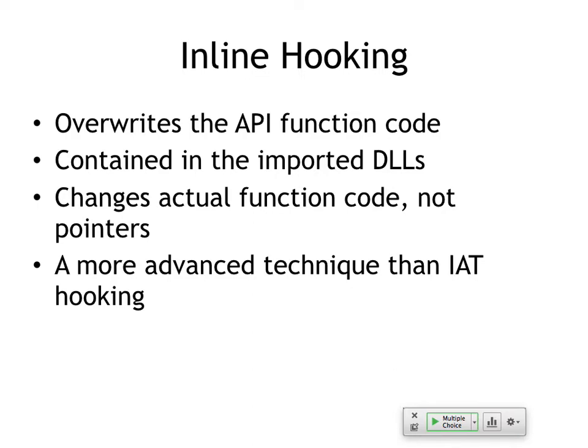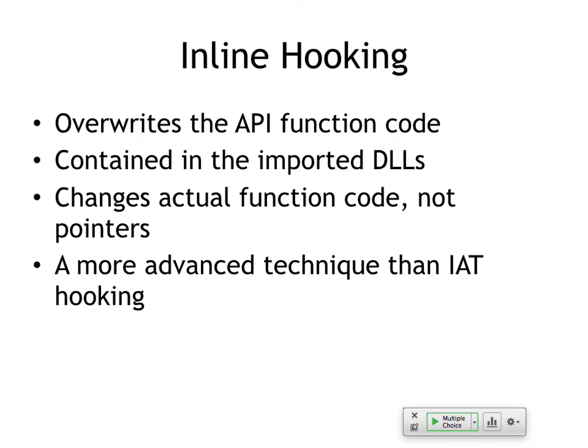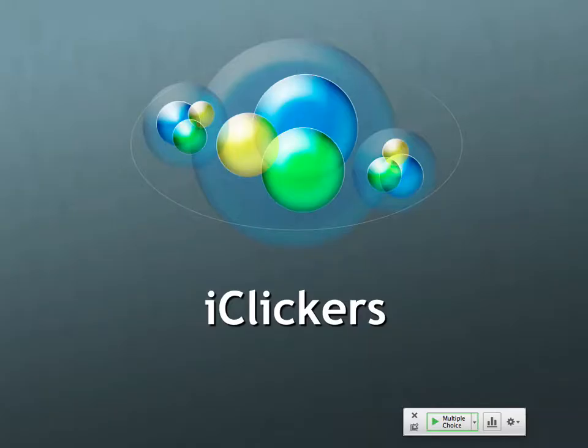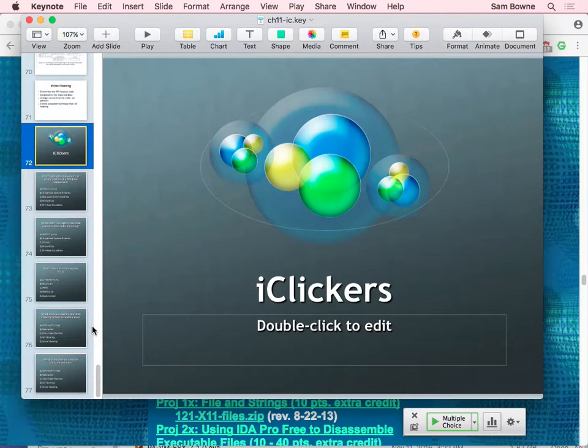Then there's inline hooking, where you actually overwrite the API function code in the DLL itself. Instead of changing the import address table, you change the actual code — the push and call instructions — and rewrite it to do something different. You have to be pretty careful or you'll break the DLLs and they won't work anymore. It's more advanced but much more subtle and harder to spot. There's not an obviously wrong number in a list of pointers — it's just a different bunch of assembly code, and unless you can read the assembler and know what it should look like, it'll be hard to tell there's been a malicious alteration. The smarter attackers can make their attack more and more sneaky and hard to detect.